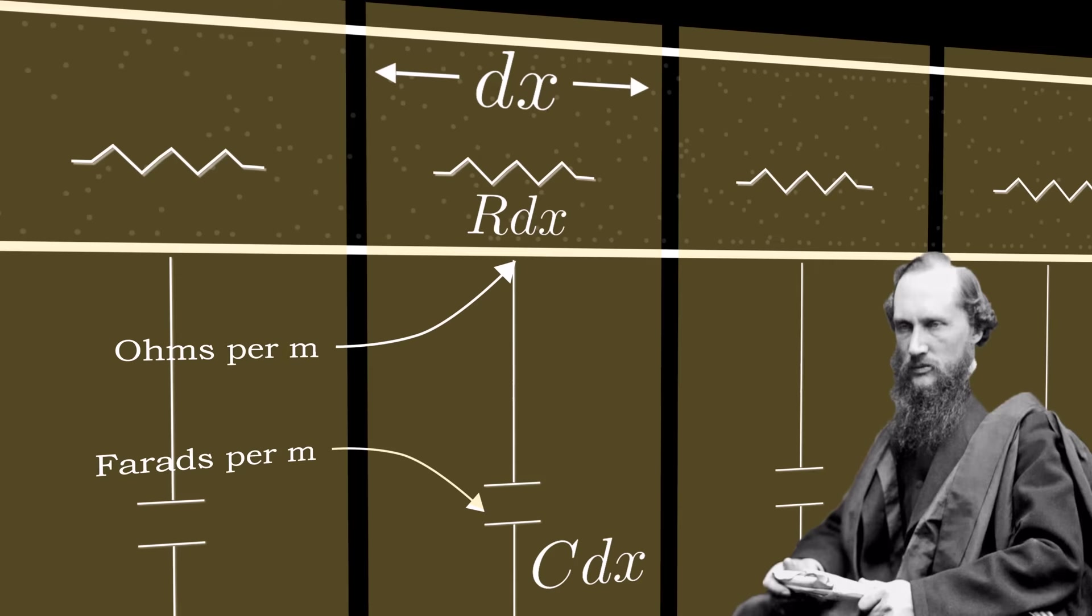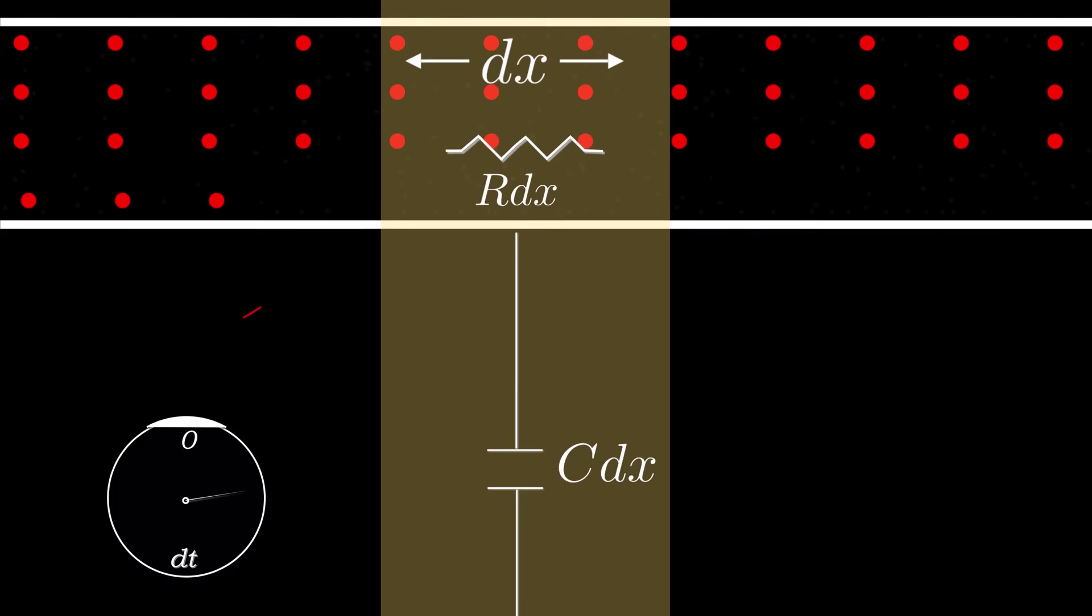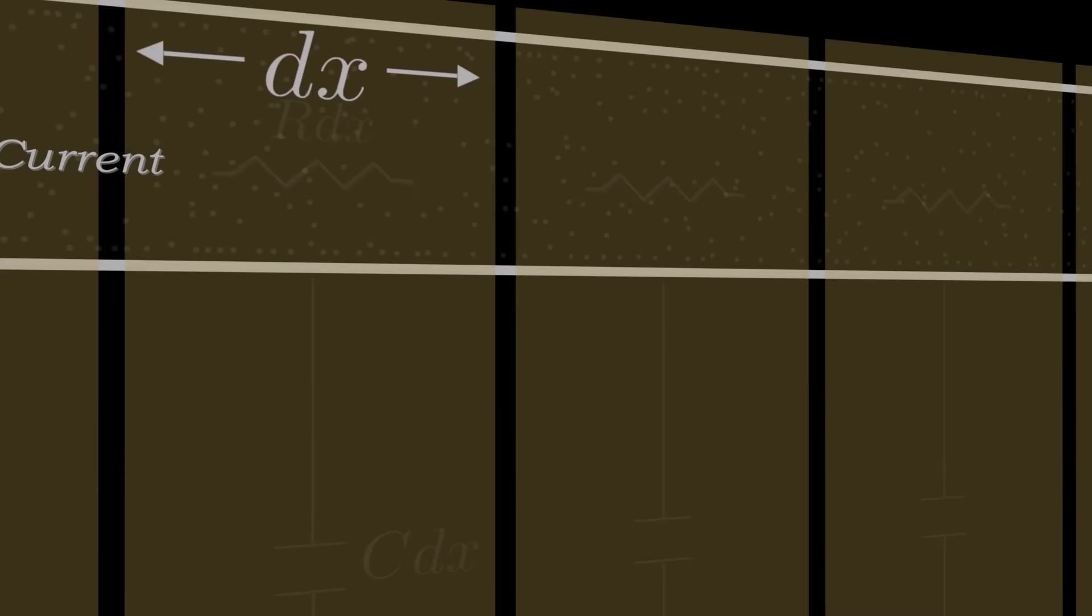The solution is subtle but brilliant. Thomson considered what might happen over an infinitesimally small time dt. Let's say within this time, there's a change of current within this region. Now, in our circuit model, we have a tiny resistance Rdx and a tiny capacitance Cdx. These two elements will experience this sudden change in current differently.